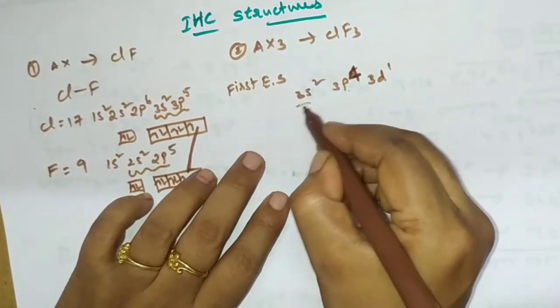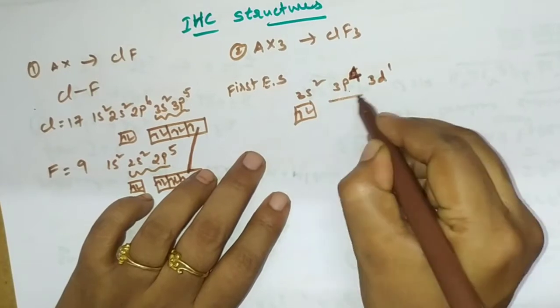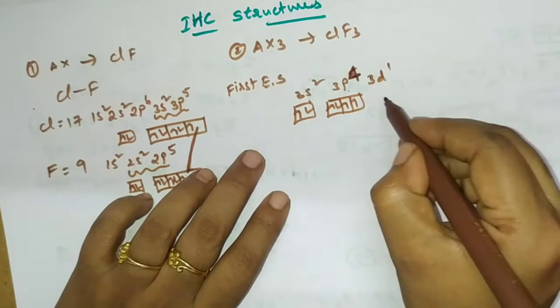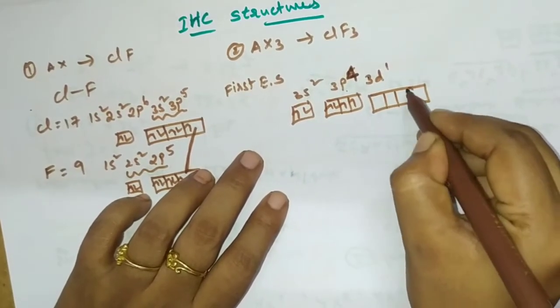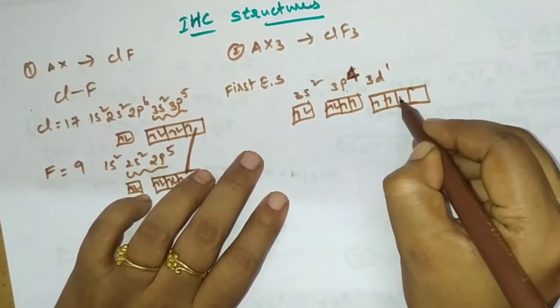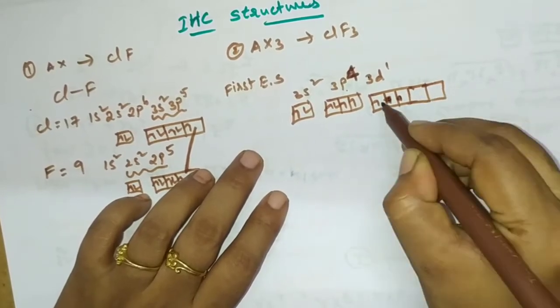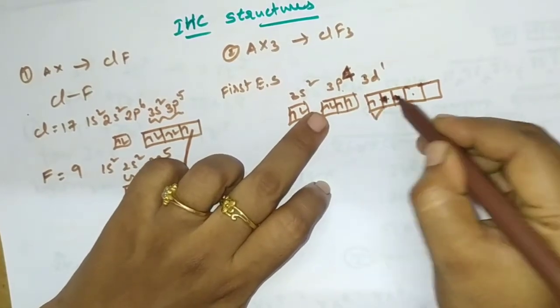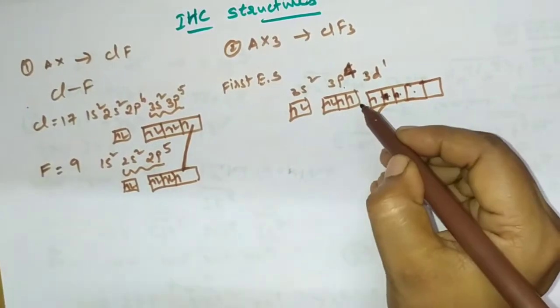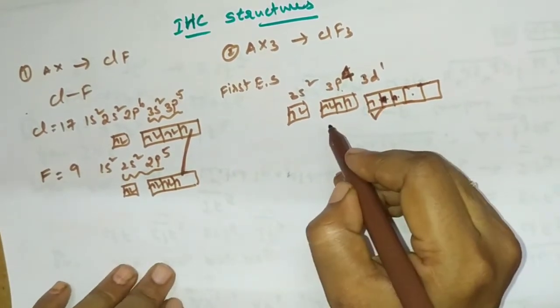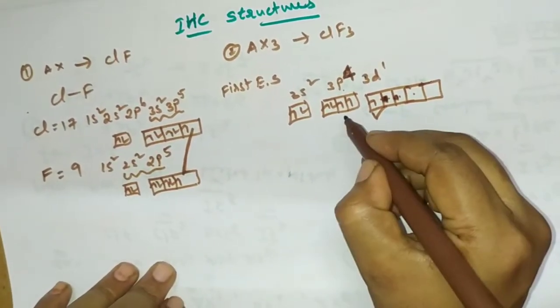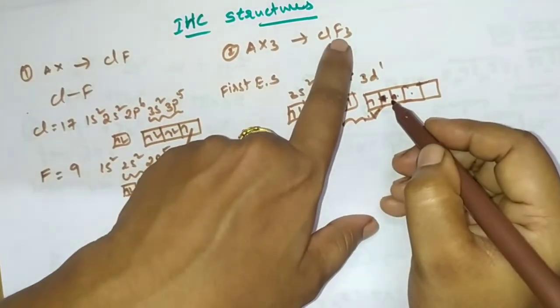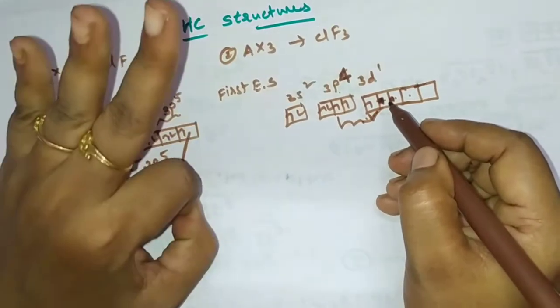That means here we have to change the unpaired electron. Here as usual two electrons will be here as usual. One electron, 1, 2, 3, 4, here we can see 1, 2, 3, 4. Here D having orbitals 5, 1, 2, 3, 4, 5. Here just one electron jumps to here. So here chlorine having the 3 electrons, 3 electrons, that 3 electrons shared with 3 fluorines, 3 bonds will be formed.